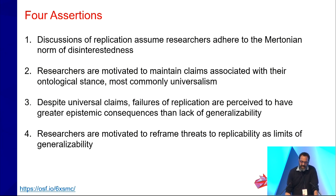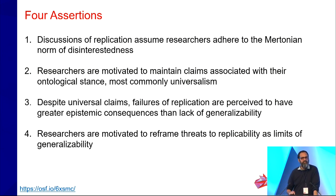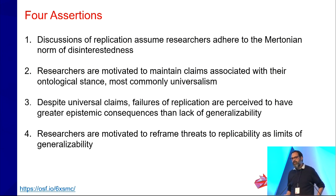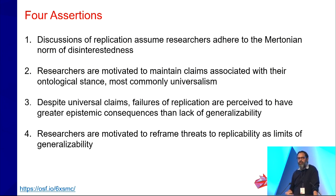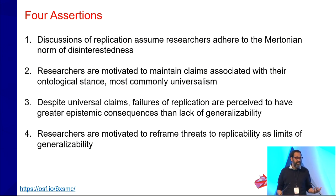Finally, because of this, researchers are motivated to reframe threats of replicability as limits of generalizability. Because there's fuzziness in these concepts, we can decide after the fact whether something counts as a replication test or generalizability test. We've seen this clearly with post-hoc degenerative claims such as hidden moderators or contextual sensitivity — ways to maintain original claims in the face of failed replication by reframing them as failures of generalizability, which are seen as less of a big deal.